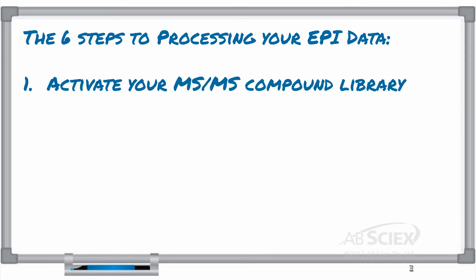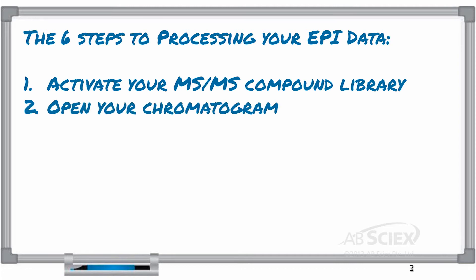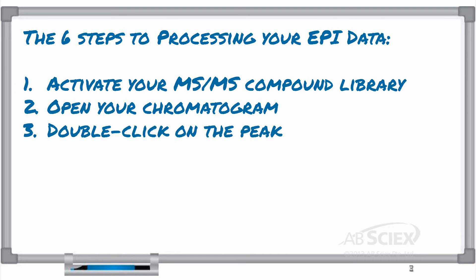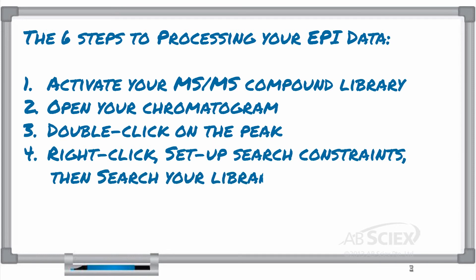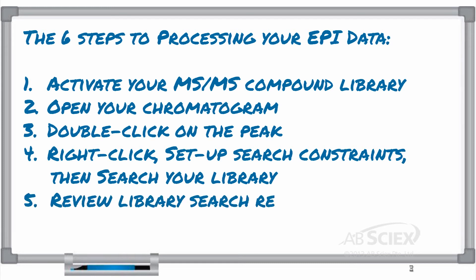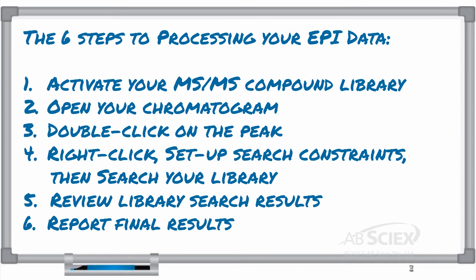Step 1: Activate your MS-MS compound library. Step 2: Open the chromatogram file for your sample of interest. Step 3: Double-click on the peak of interest. Step 4: Right-click in the EPI pane, set up the search constraints, then search your compound library database. Step 5: Review the library search results. Step 6: Report your final results.